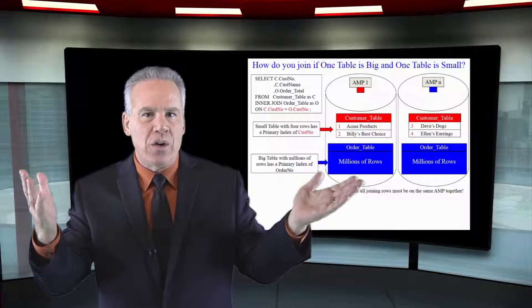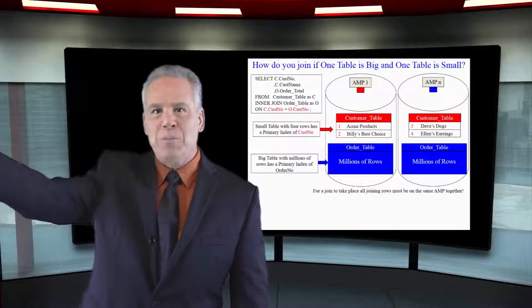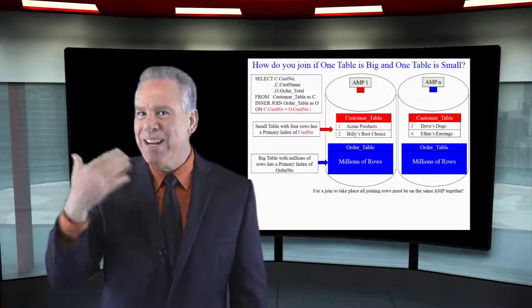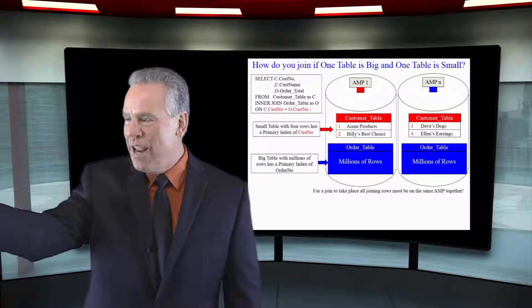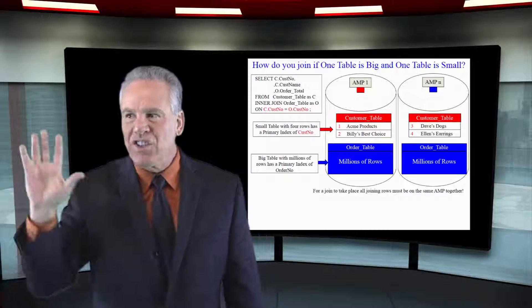So as we've learned, you're probably saying to yourself, they're going to have to take those millions of rows and redistribute that order table by customer number. But the parsing engine says, stop.